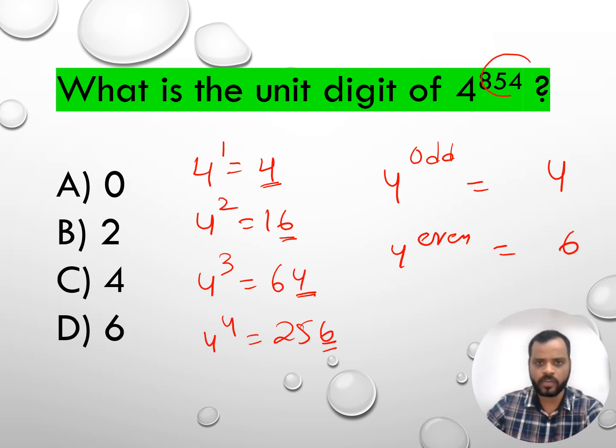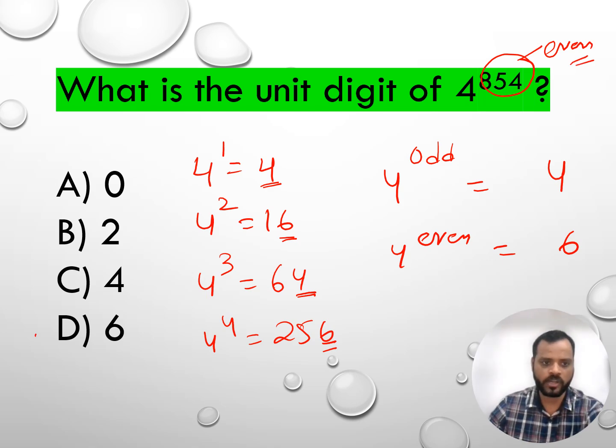Since 854 is an even number, we will get the unit digit as 6.